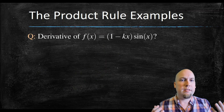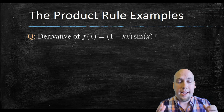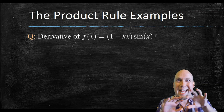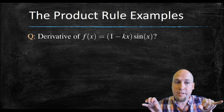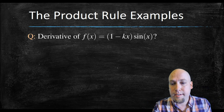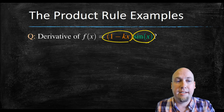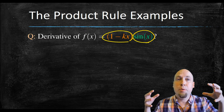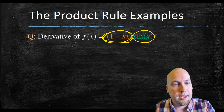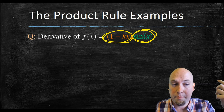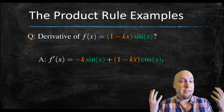Let's do another example: find the derivative of (1 − kx) times sine of x. Again, the first thing is to identify how to break it down into a product of two functions whose derivatives you know. The first function is 1 minus kx, and the second function is sine of x. Then you're just plugging into the formula for the product rule — take the derivative of the first times the second, plus the first times the derivative of the second.